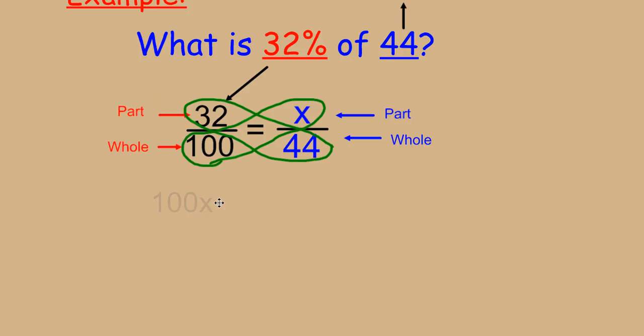All we're going to do is rewrite 100x equals 44 times 32. Now we're going to solve or evaluate each side of this equation, and we get 100x equals 1,408. 44 times 32 equals 1,408.